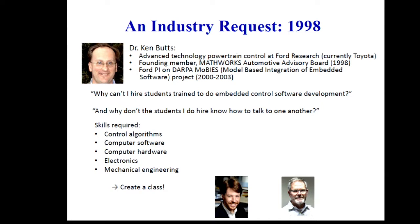So we decided to develop a class. It's complicated because you need control algorithms, software, hardware, electronics, some mechanical engineering — there's no one student that ever comes through the curriculum and gets all that. Ken came over to Michigan with his people for a day and we made decisions: the class should be about two-thirds C programming and one-third autocode generation, because autocode enables model-based development and rapid prototyping but hides too much from students.